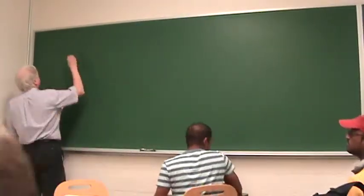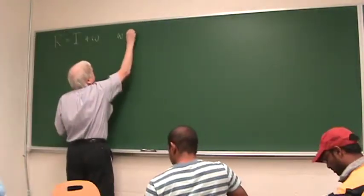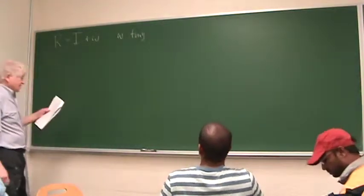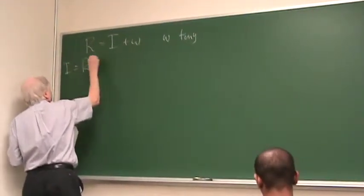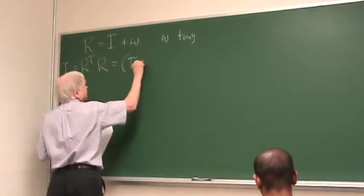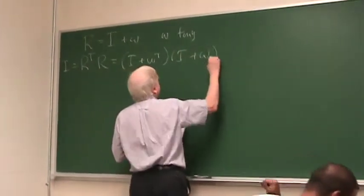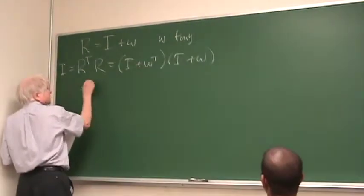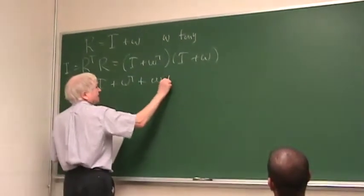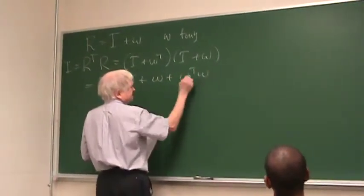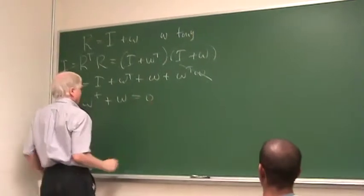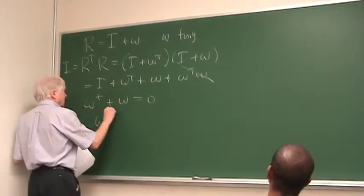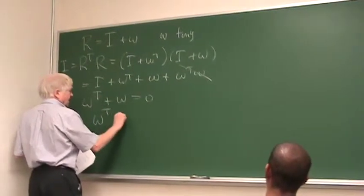So R, and now R is equal to I plus omega. Omega is tiny, it's a tiny three by three matrix. And so the rule is R transpose R is the identity. So that's I plus omega transpose times I plus omega equals one. This is I plus omega transpose plus omega plus omega transpose omega. This is super infinitesimal, we ignore it. And so we say omega transpose plus omega is zero.